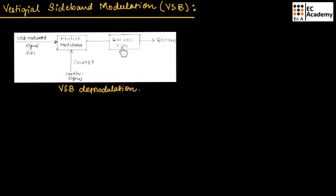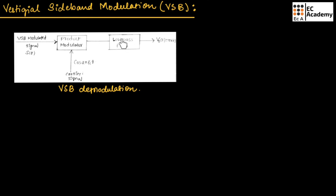This block diagram shows VSB demodulation. The VSB signal is multiplied with a carrier signal using a product modulator, and then passed through a low-pass filter to obtain the original message signal.